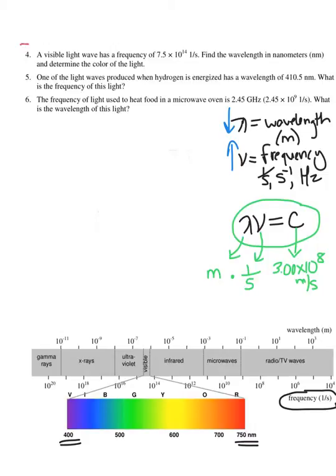Let's look at example four. A visible light wave has a frequency of 7.5 times 10 to the 14th, one over seconds — which is the same as seconds to the minus one, or hertz. Find the wavelength in nanometers and determine the color of the light. So I'm given the frequency and need to find the wavelength, using the equation where wavelength times frequency gives me c, the speed of light.